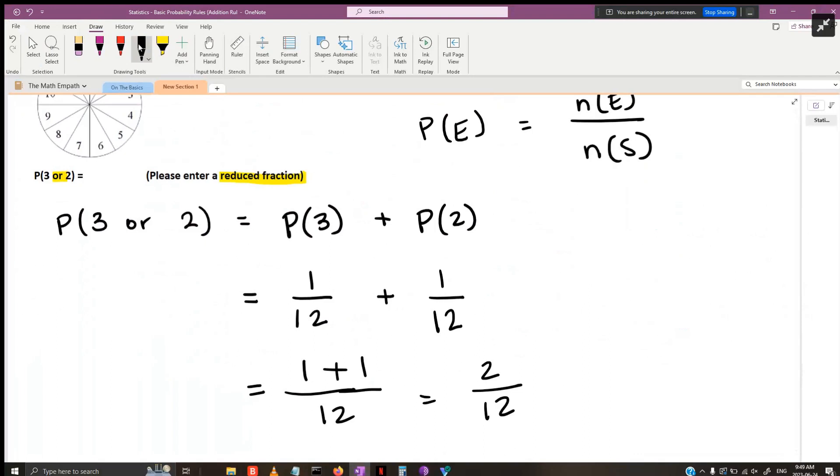They tend to want the simplest version of a fraction anyway. Always make sure if you're providing your answer as a fraction, try to reduce it if you can. Sometimes you can't, like seven out of nine—they're both prime numbers with no shared factors. But two out of 12 we can reduce. We're going to take out the factor of two that's shared between two and twelve, leaving one out of six.